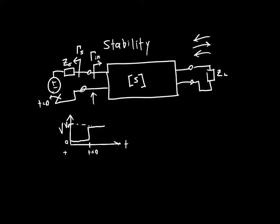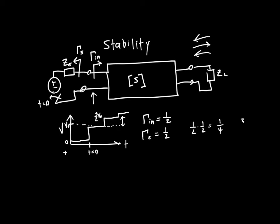Let's say gamma_n equals one-half. So one-half of v-naught, or one-half of the incoming wave, gets reflected, and we're now up to three-halves v-naught. Then this additional wave starts traveling back to the source and gets reflected with value gamma_s. Assuming gamma_s is also one-half, we get an additional one-half of one-half, or one-fourth of v-naught, giving us three-halves plus one-fourth, which is seven-fourths v-naught. You can see this will go on and on and eventually stabilize at a certain value.